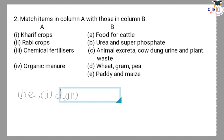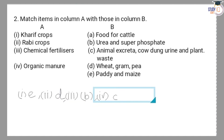The third item is chemical fertilizer. So the answer is (b) urea and super phosphate.